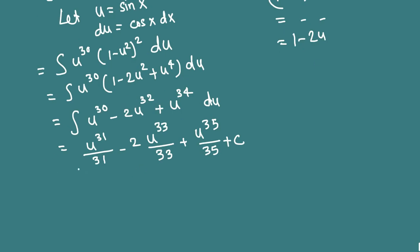Now we back substitute the value of u. We are done. u is sine x. Writing the constant in front: (1/31)sin^31(x) - (2/33)sin^33(x) + (1/35)sin^35(x) + c. Final answer.